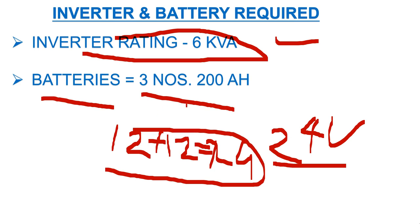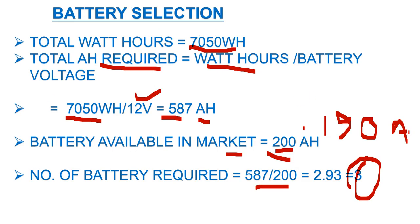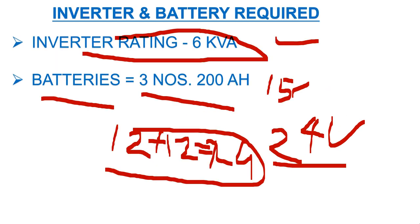In conclusion: for this load you need a 6 kVA inverter. Note that for inverters above 3 kVA, the operating voltage is 24V, so batteries must be connected in series — 12V + 12V = 24V. Based on our calculation you need either 4 batteries of 150 Ah or 3 batteries of 200 Ah. I hope you understand how to calculate and select the inverter and battery. Please subscribe to the channel and share this video — thank you.